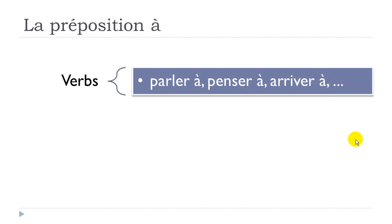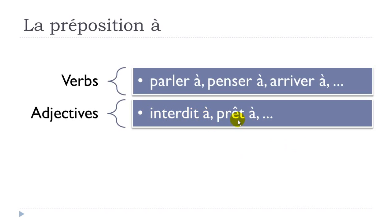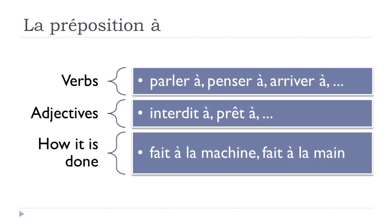When you encounter a new verb with a preposition, try to write it or memorize it — that's the way it works. You can also combine this preposition à with adjectives. For instance: interdit à (forbidden) or prêt à (ready). To express how something is done, you use fait à la machine or fait à la main — machine-made or handmade.